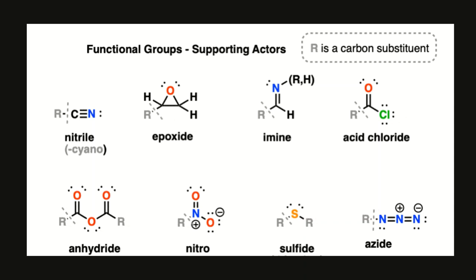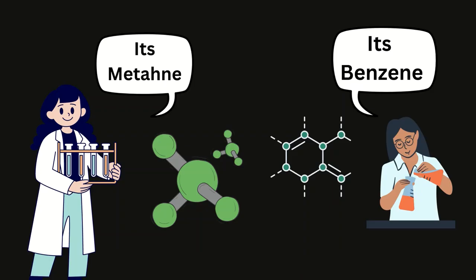A functional group is an atom or set of atoms that are connected to a molecule in a specific way. These functional groups are responsible for the chemical properties of an organic compound.